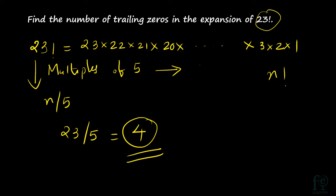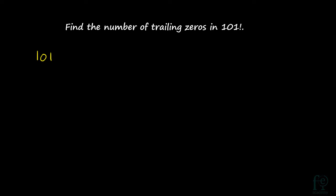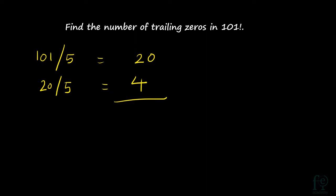Now let us go to the second question — it will be more clear to you. Find the number of trailing zeros in 101 factorial. First, divide 101 by 5, which gives you 20. Then again divide 20 by 5, which gives you 4. You can stop there because you got a number less than 5. So you add both: 20 plus 4 equals 24. There will be 24 trailing zeros in 101 factorial.